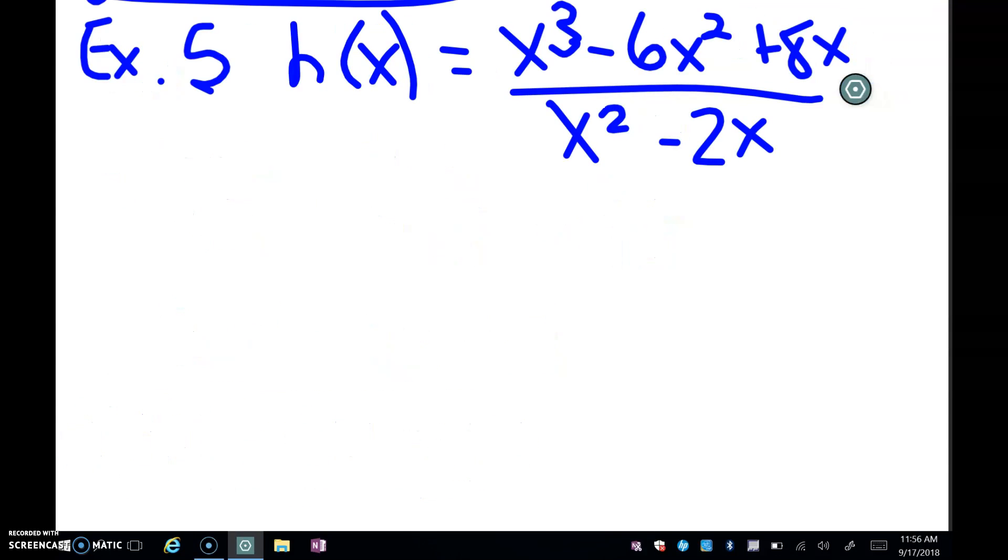My final example of the sum and difference rule is this one. And again, it's a division problem, and we can't have that. So my strategy here is to try to factor the numerator and denominator and hopefully simplify it down to a sum and a difference. So let's do that. So in the numerator, I can factor an x out.